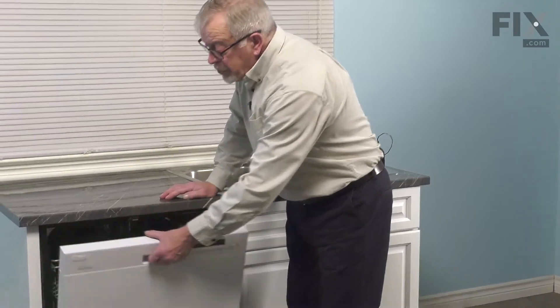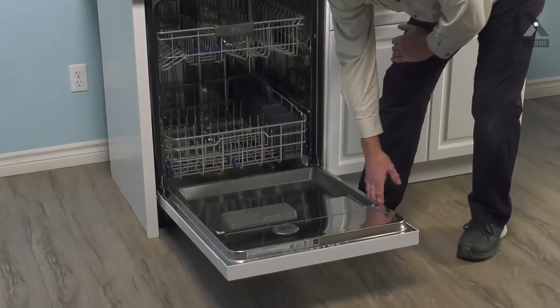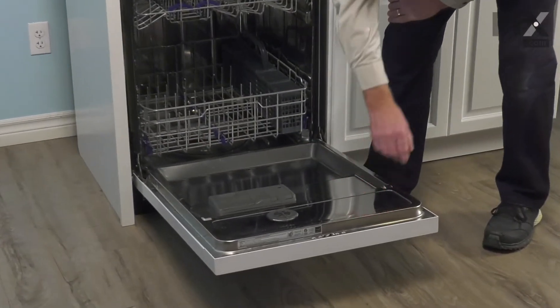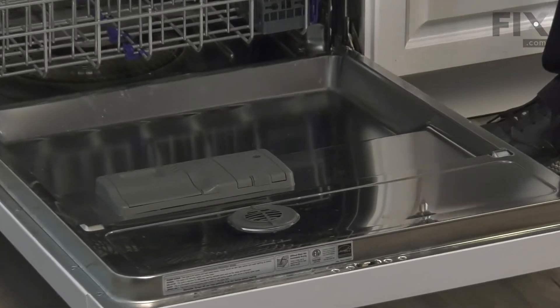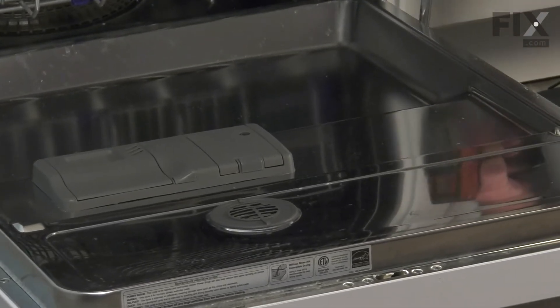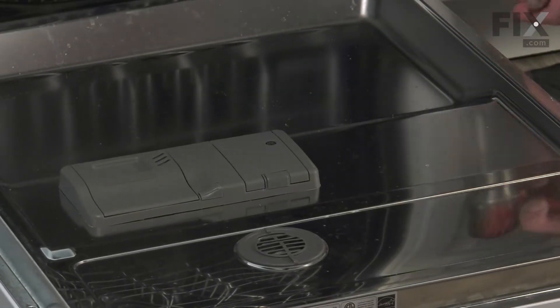We're just going to open the door up. We're going to remove all of the screws that secure the outer door panel and the console to the inner door panel. These are all number two Phillips screws, but there are different lengths. Be sure to take note of where you remove the different screws.